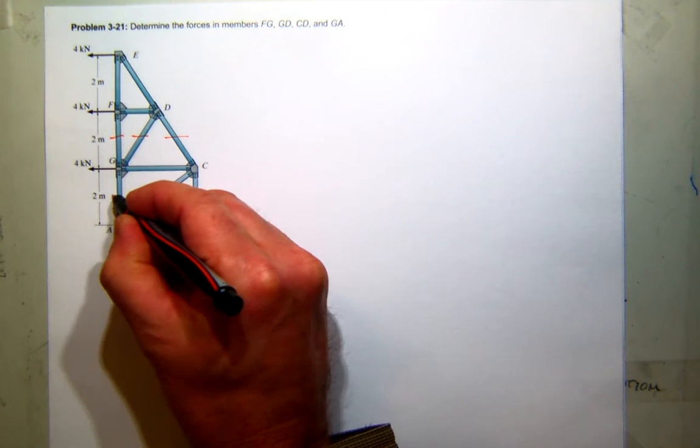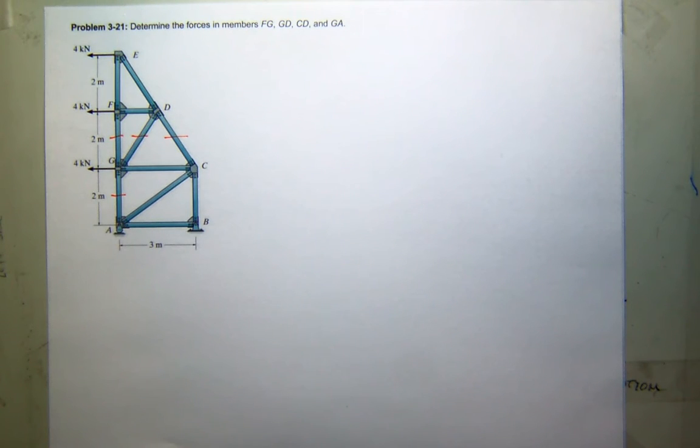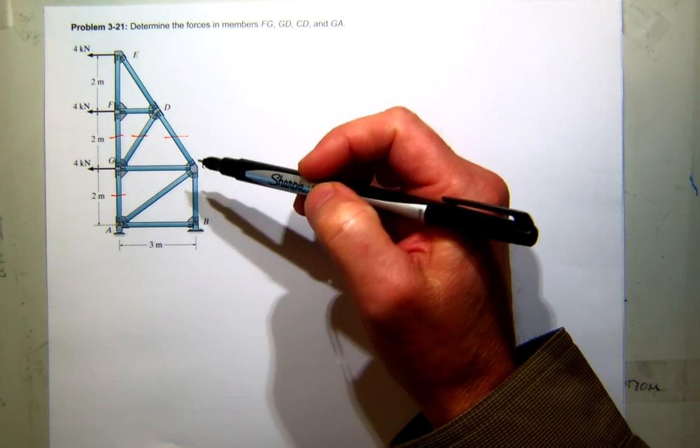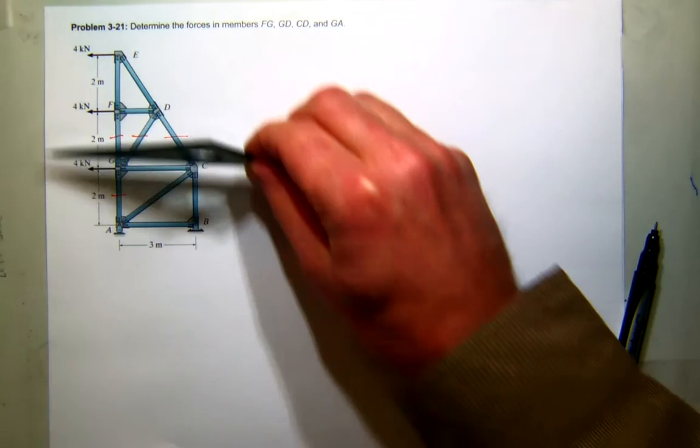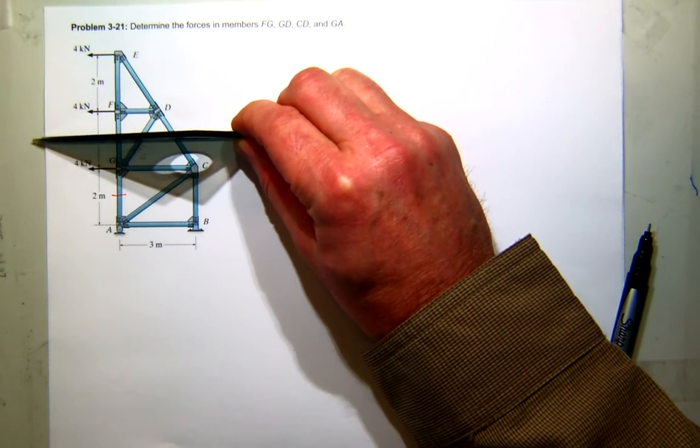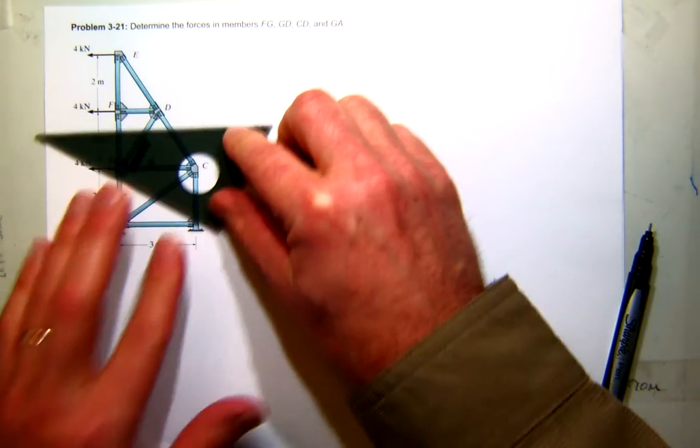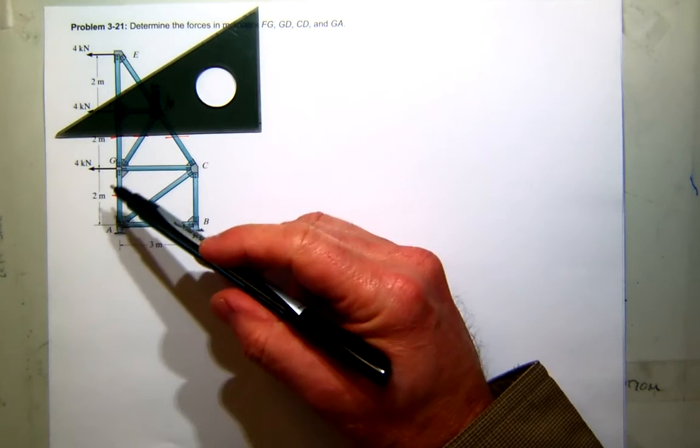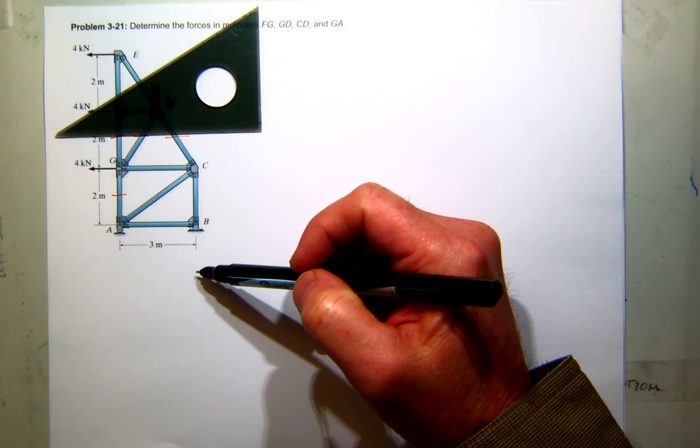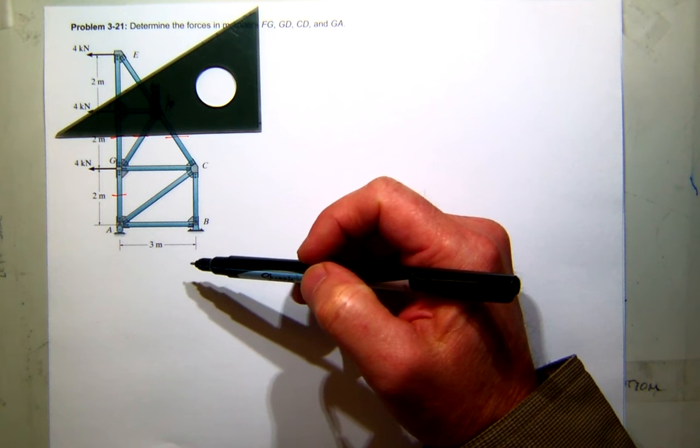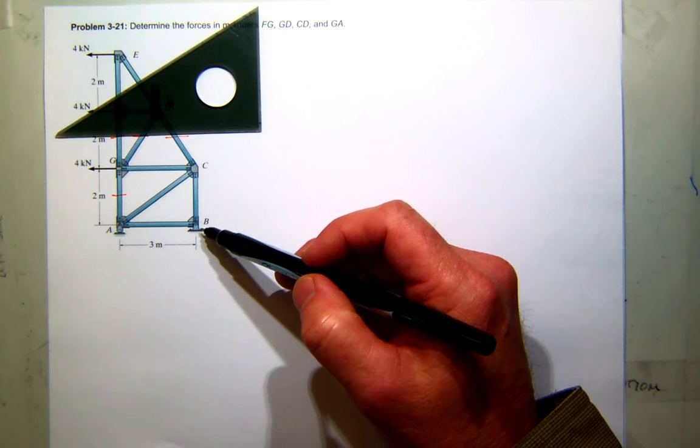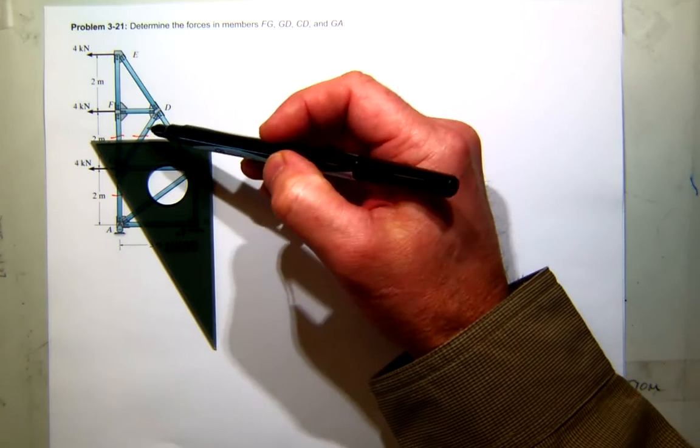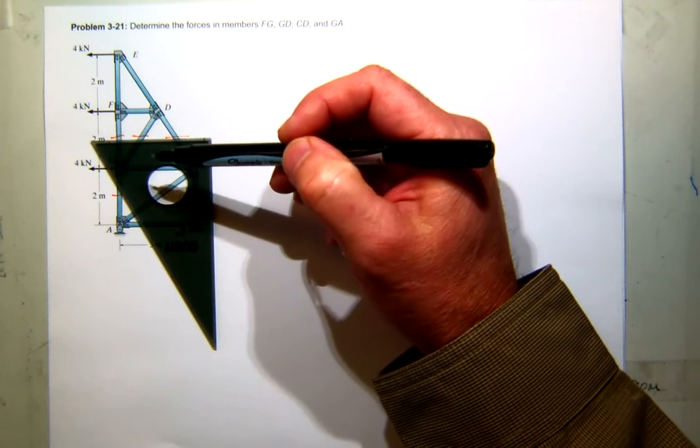And then it says GA, which is here. So I think a good strategy for this problem would be to do a section. If I were to cut a section through here, I can now get three of those elements. And now I have to decide whether I want to work the top side or the bottom side. The great thing about these kinds of trusses that look like this, these tower-based ones, is if I look at just the upper piece, you can see I don't need any reactions.